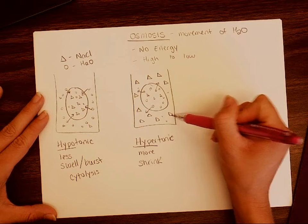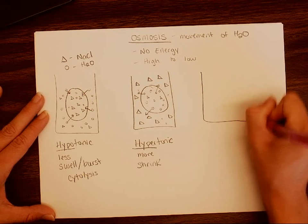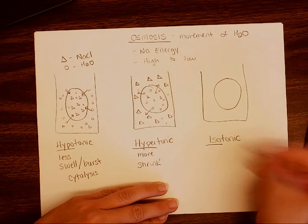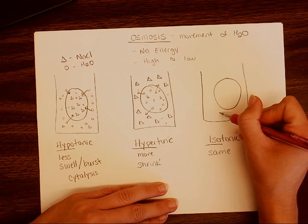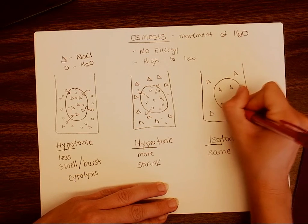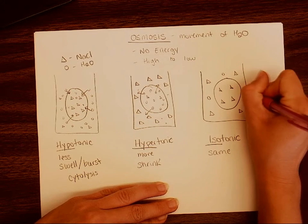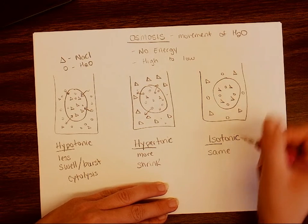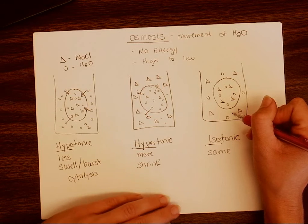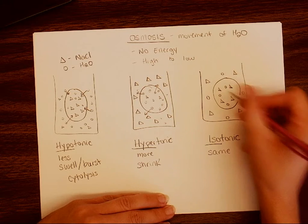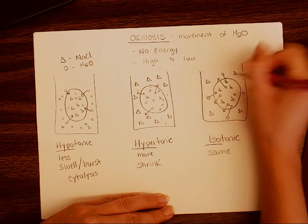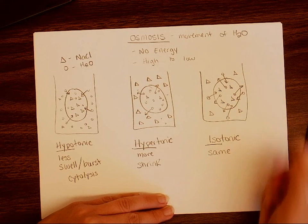We have one more type of solution: the isotonic solution. The root iso means the same, so we see the same concentration of salt outside as inside the cell — four salt molecules outside and four inside, and four water molecules outside and four inside. In an isotonic solution there is still movement of water across the cell membrane because water has kinetic energy that keeps it in motion. Water flows in and out at the same rate, so the cell remains the same size.